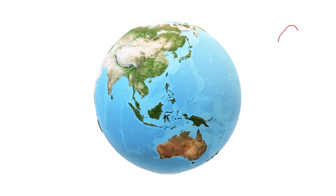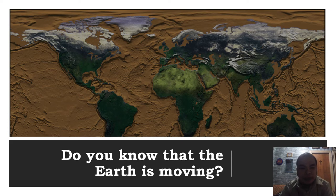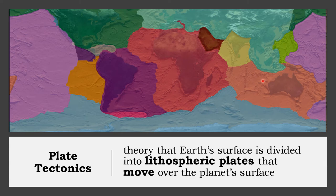Did you know that the earth is moving? Yes, it is moving — though it may not be obvious, it actually moves about two centimeters per year on average. According to plate tectonics, earth's surface is divided into lithospheric plates that move over the planet's surface.